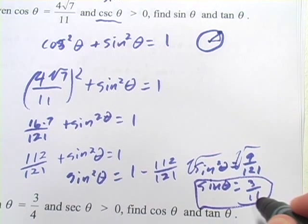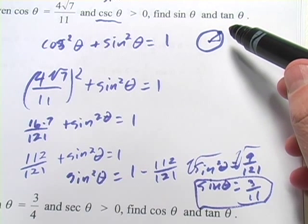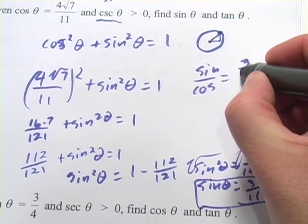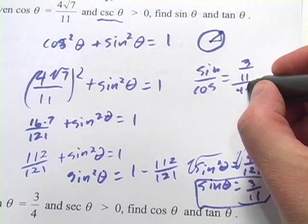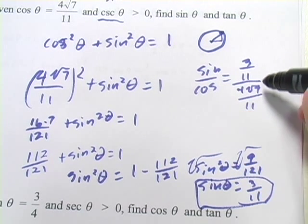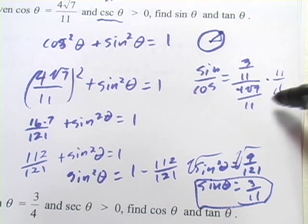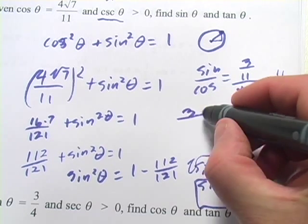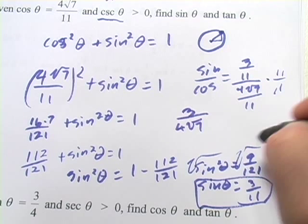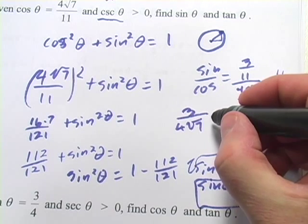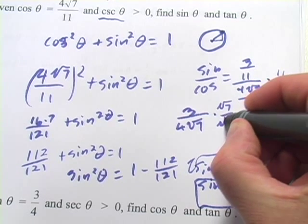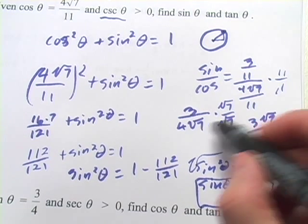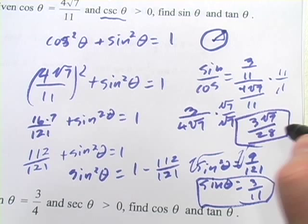So we found our sine. The other value we need is the tangent — remember, the tangent is the sine over the cosine. So we set that up: 3 over 11 divided by 4 times the square root of 7 over 11. Multiplying by 11 over 11 to eliminate the compound fraction gives us 3 over 4 times the square root of 7. To rationalize the denominator, we multiply by square root of 7 over square root of 7, giving us 3 times the square root of 7 over 28 for our tangent.